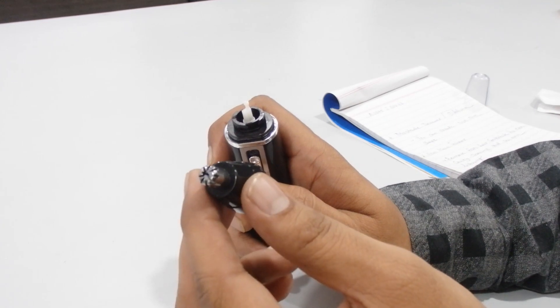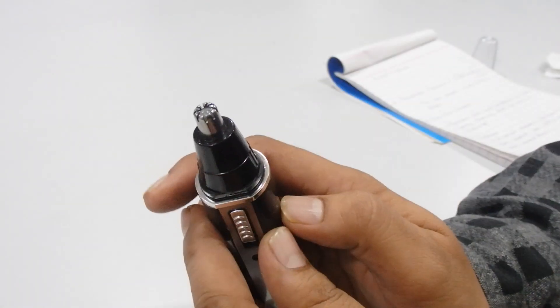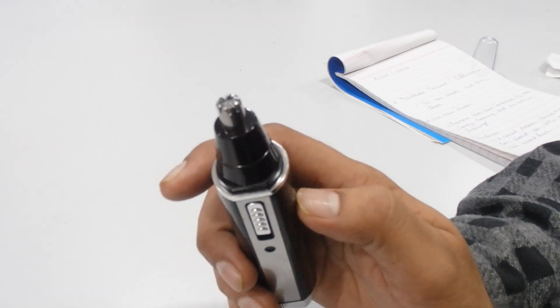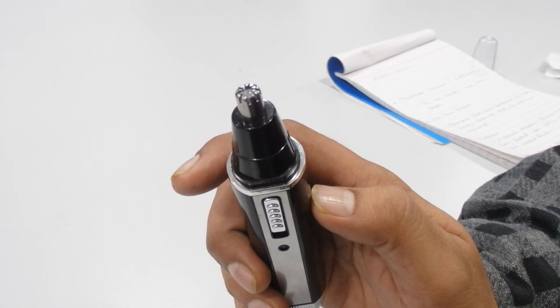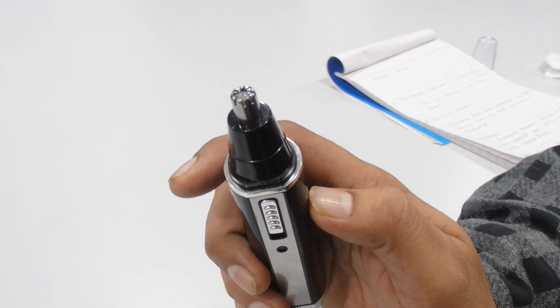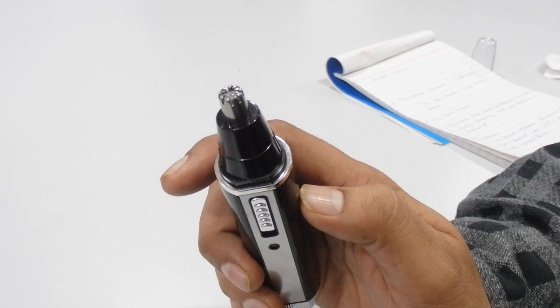This is the last trimmer, the nose and ear trimmer. With the nose trimmer, you can remove nose hair to provide smooth breathing. With the ear trimmer, you can remove ear hair, contribute to ear cavity cleaning, and improve listening.